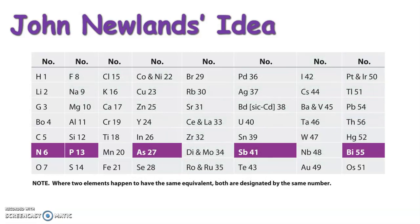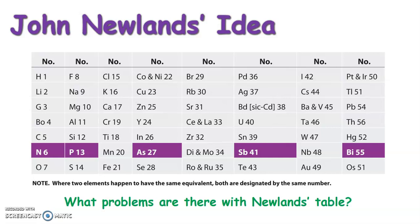Here is a version of Newlands' table. He looked at every eighth element and found they had similar properties — for example, phosphorus and then counting every eighth element showed similar properties. Where two elements happened to have the same equivalent position, both are placed in the same box, which is why some boxes in his table contain two elements. This is one of the flaws in his process — he was working with much more limited information than we have today.